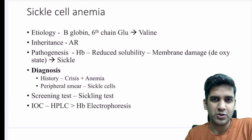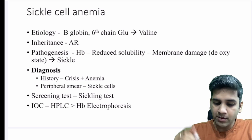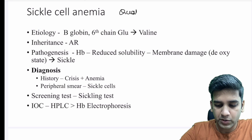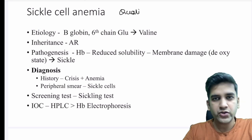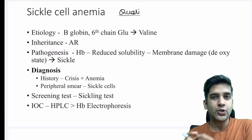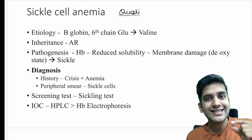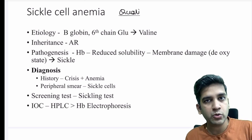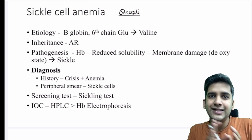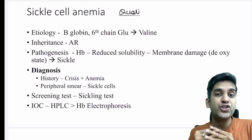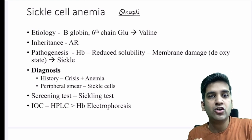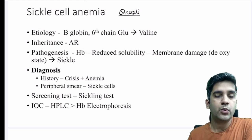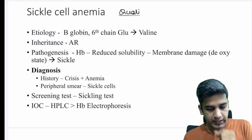Sickle cell anemia is one of the hemoglobinopathies. It is a qualitative hemoglobinopathy. We divide hemoglobinopathies into quantity and quality. In thalassemia there is less production of the chain — we call them quantitative hemoglobinopathy. In sickle cell and HbC, where the function or quality of the hemoglobin is affected, we call them qualitative hemoglobinopathy.